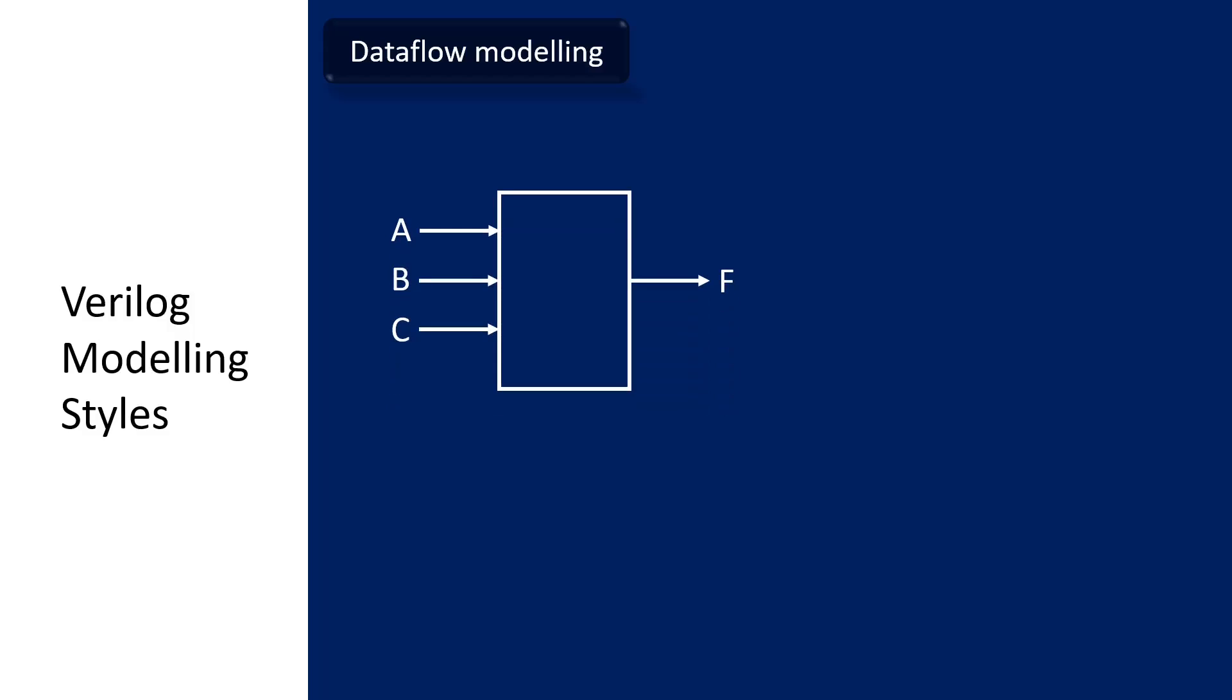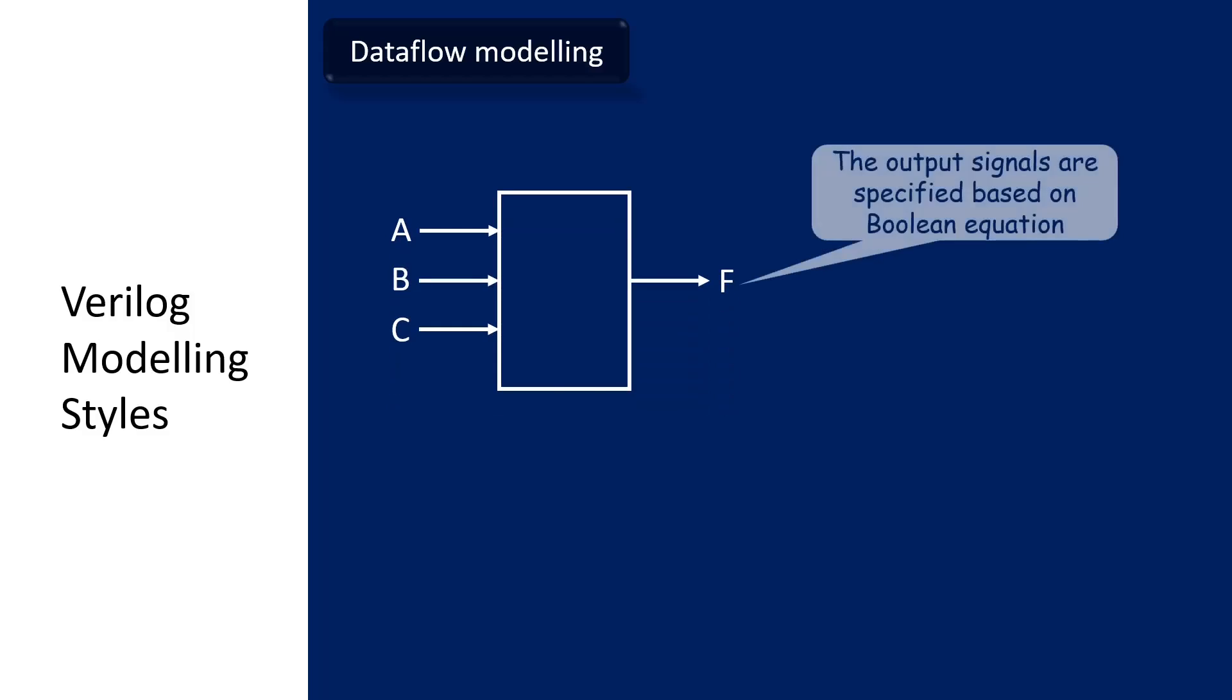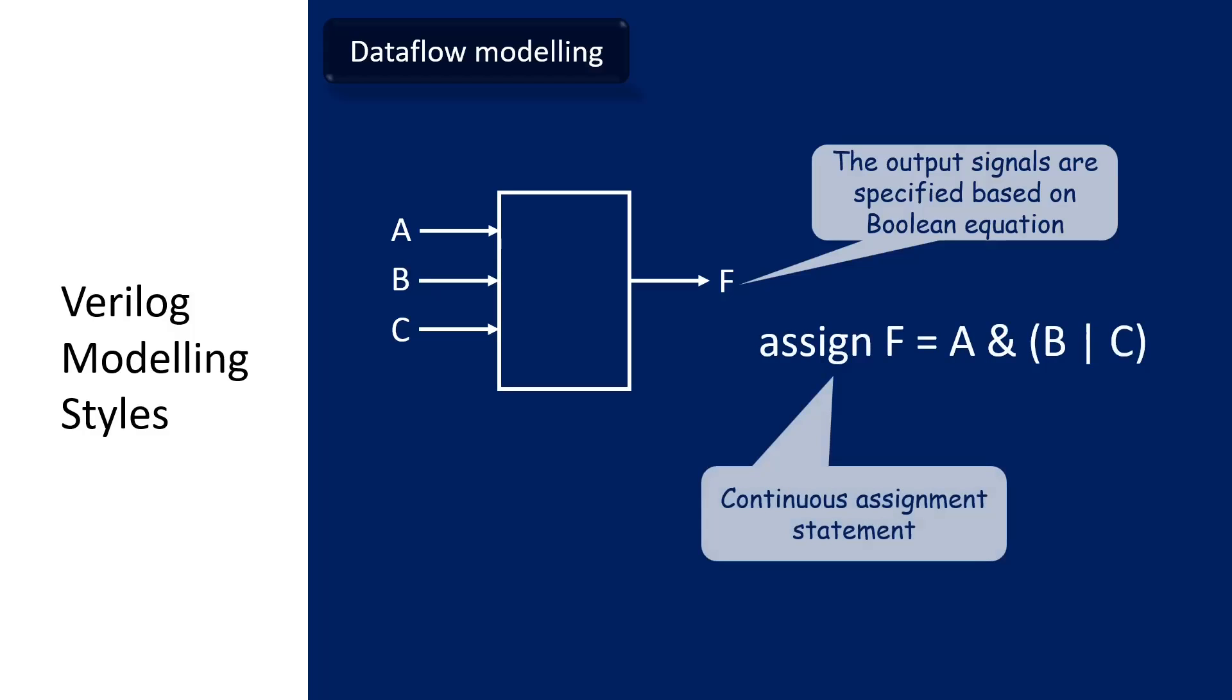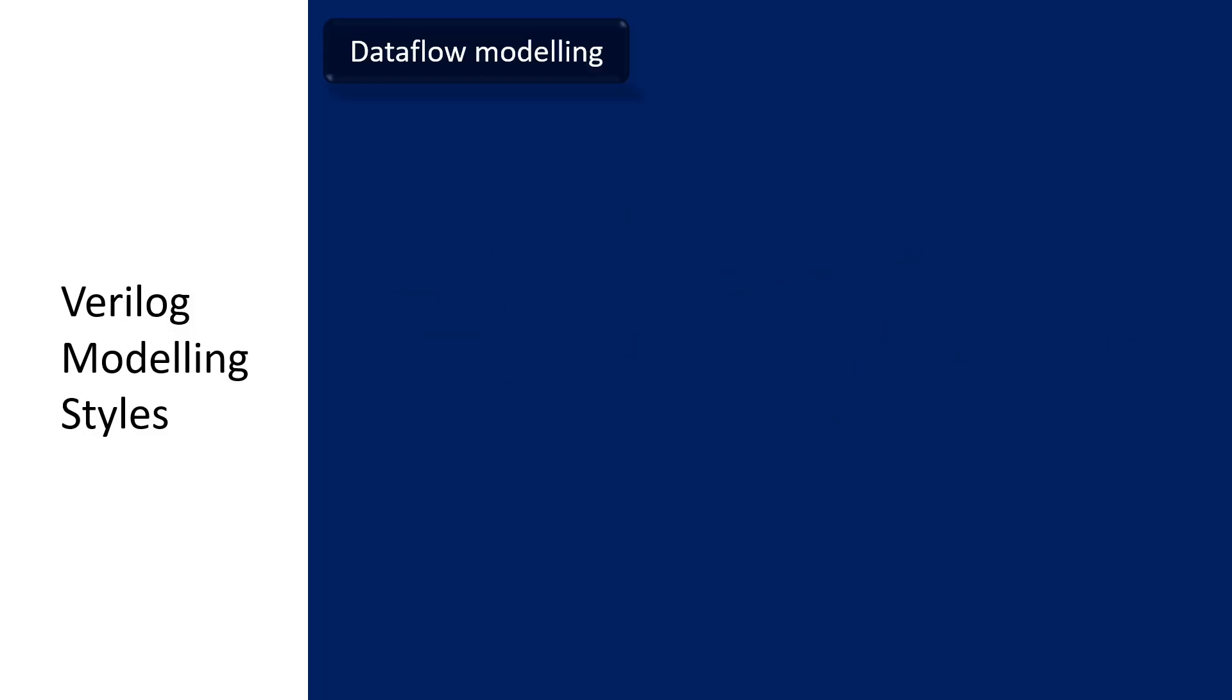Let's look at what is dataflow modeling. In dataflow modeling, the output signals are specified based on the Boolean equation. In the Verilog code, we will use the assign keyword or the continuous assignment statement to model the logic based on the Boolean equation. In this example, the output F is equal to A and B or C.